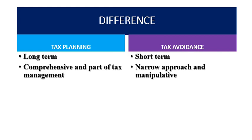Tax planning is long-term, while tax avoidance is short-term. Tax planning is comprehensive, whereas tax avoidance is a narrow approach — a manipulative approach — because we use loopholes to save our tax.